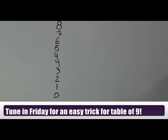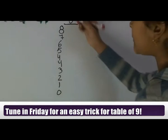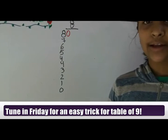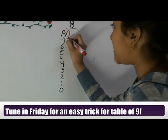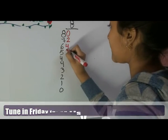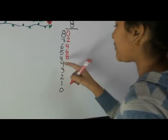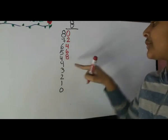Next you're going to be writing zero next to the eight and you're going to be skipping two numbers. So after zero it's two, four, six, eight and you're going to stop at your first four.